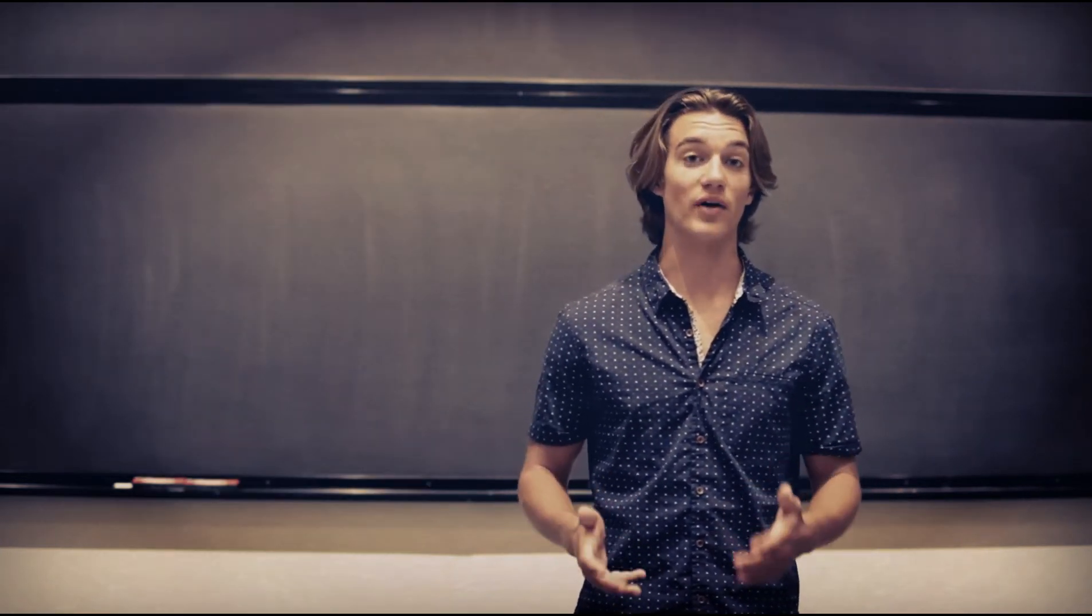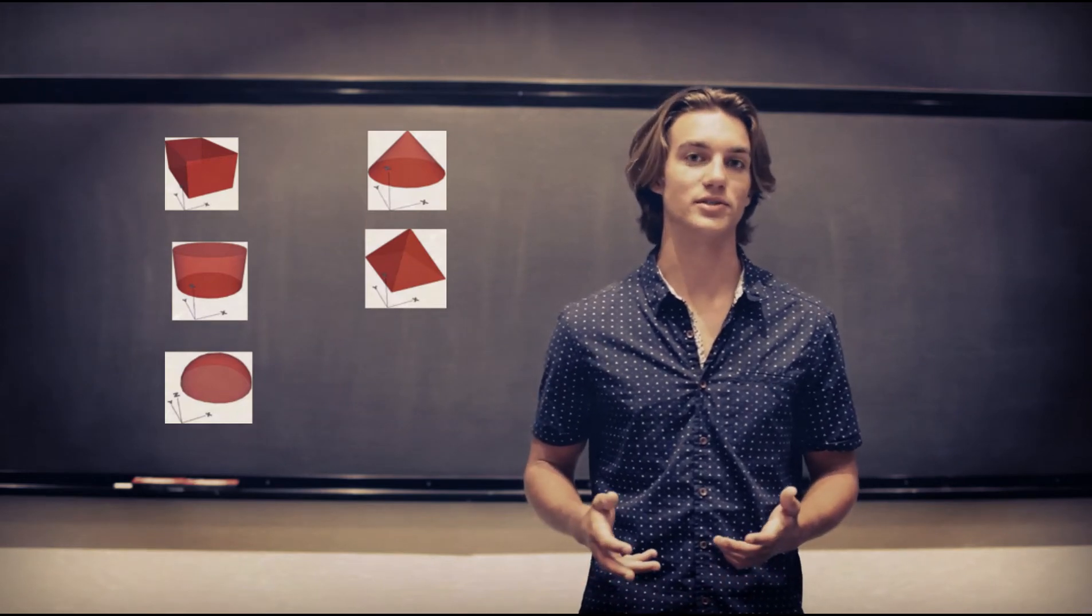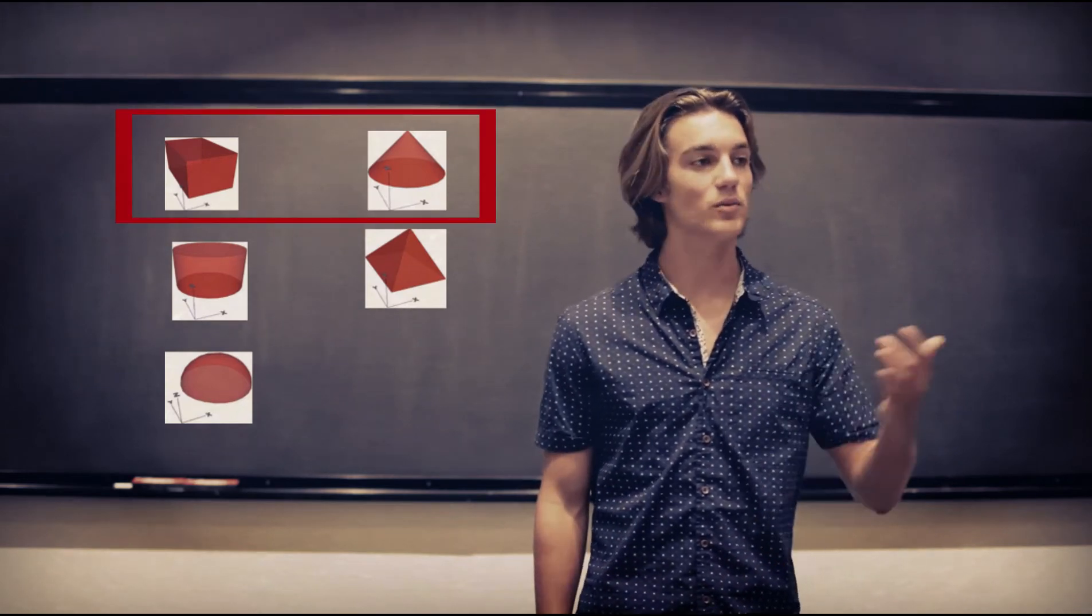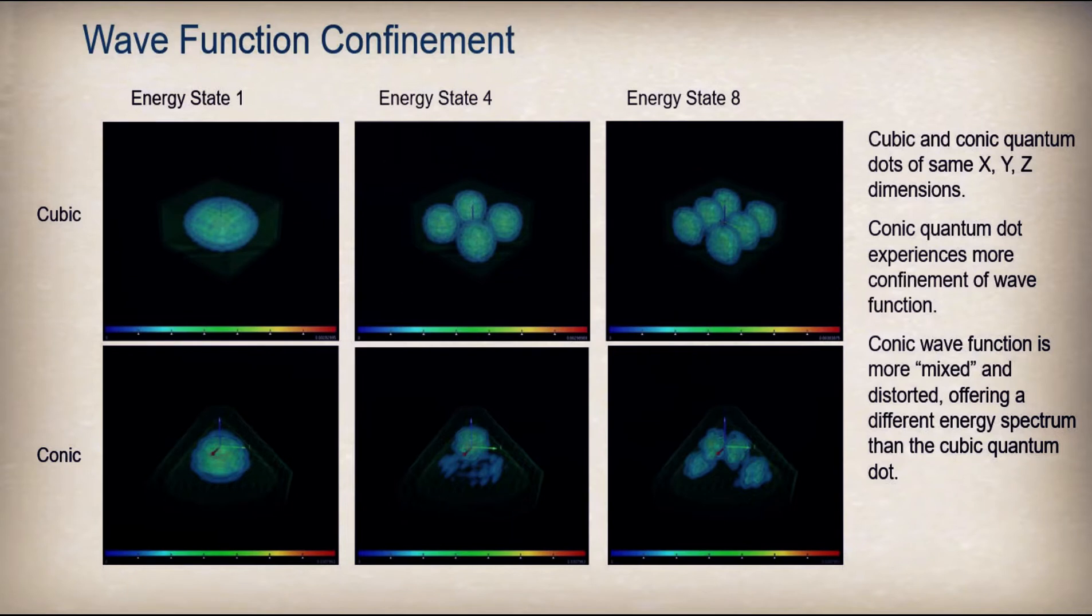Within this process, I modeled five different atomic configurations. Two worthy of mentioning, cubic and conic, having different geometries elicits a different wave function confinement, which then grants a different emission spectrum. This is due to the distorted wave function of the conic quantum dot, as seen here.